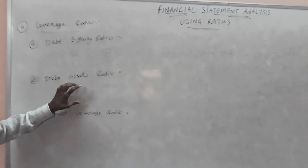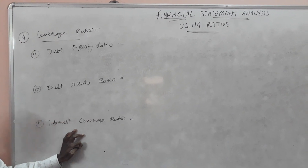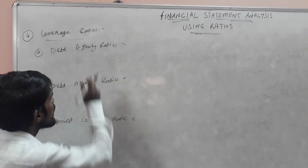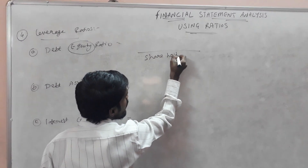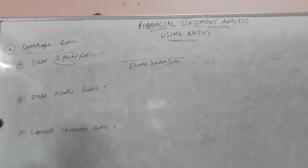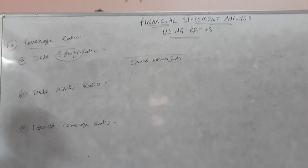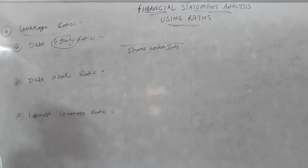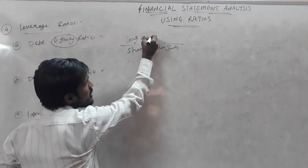Equity is nothing but shareholder funds, assets is nothing but fixed assets, and interest is what we pay on bank loans. So first we write the formula for the debt-equity ratio. Equity means shareholder funds. We will deal with shareholder funds, and under shareholder funds we have to deal with the debt. We have to deal with the long-term liabilities, not the short-term liabilities.